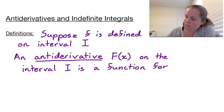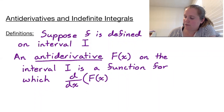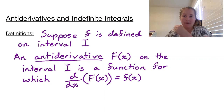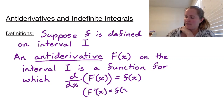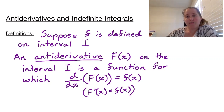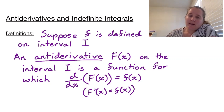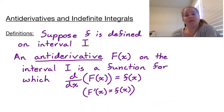...for which the derivative of capital F of x, the anti-derivative, is equal to our lowercase f of x, the original function. In other words, capital F prime of x is equal to lowercase f of x. So essentially, lowercase f is acting as the derivative, and capital F of x is the original function. We're basically undoing a derivative.